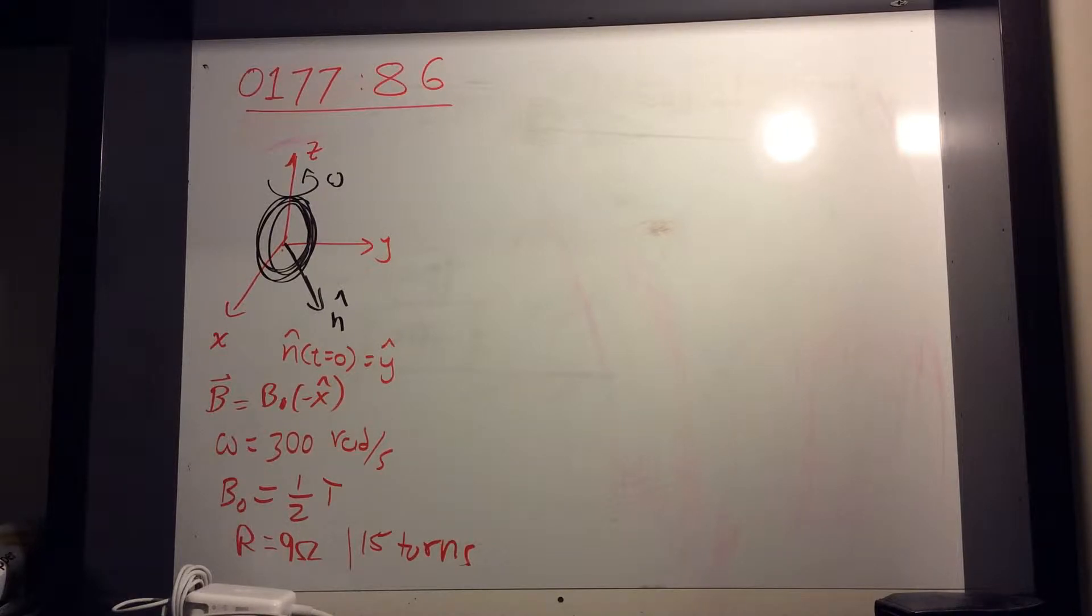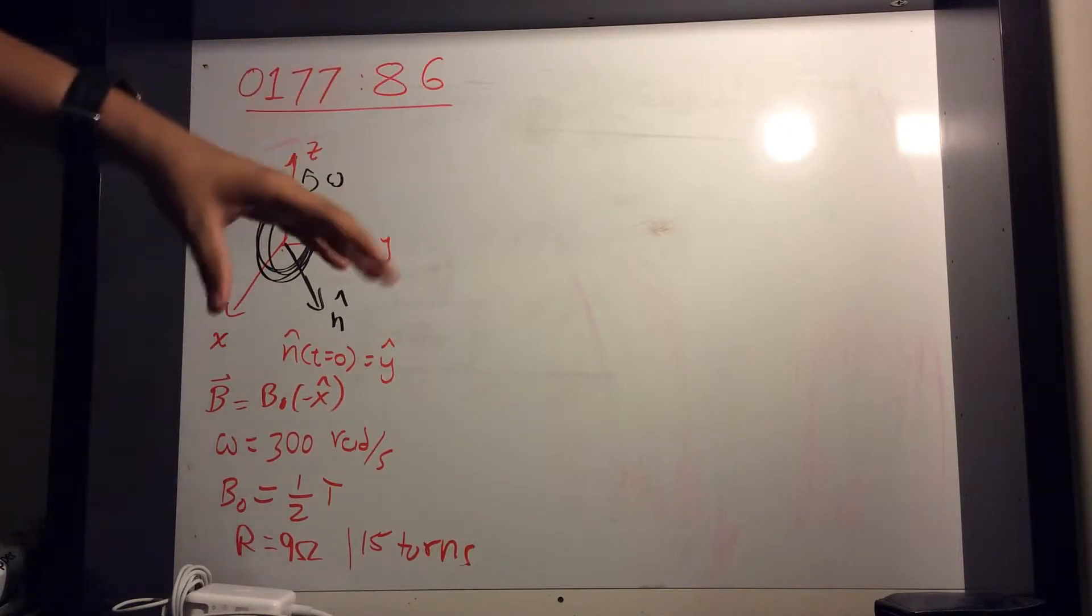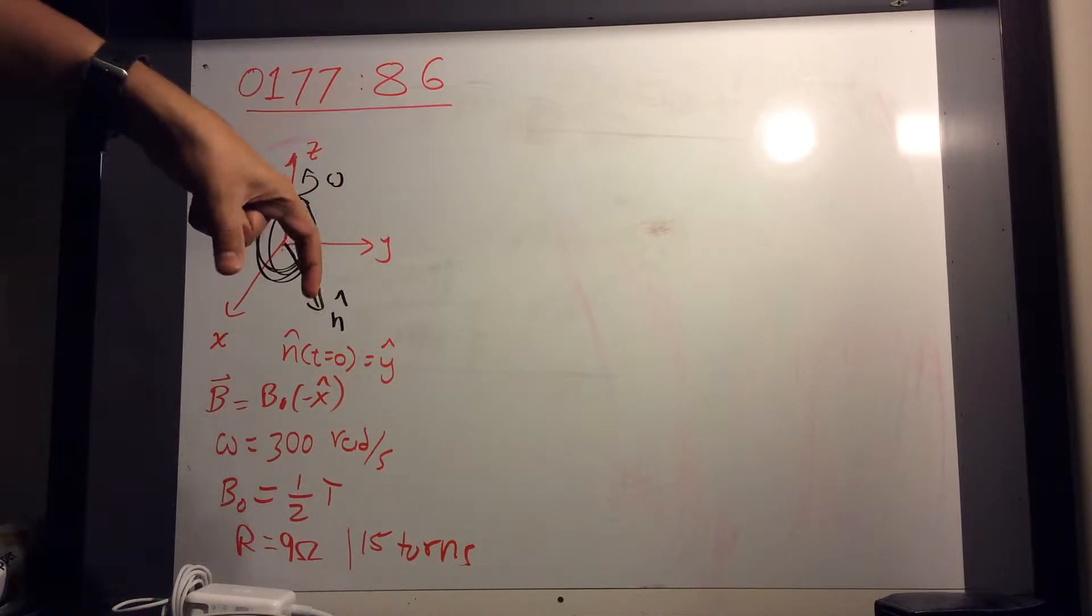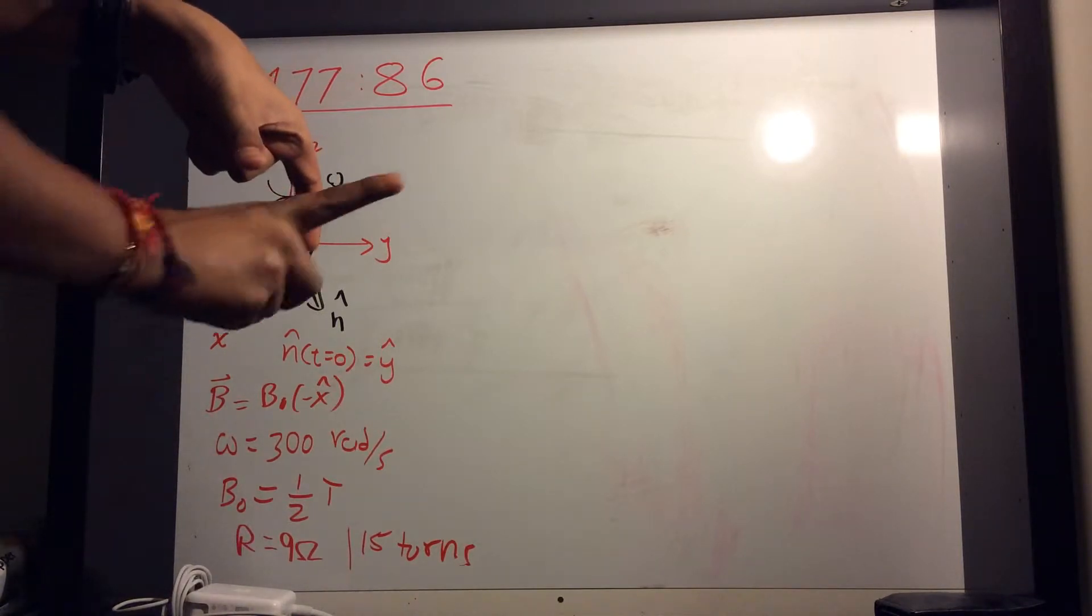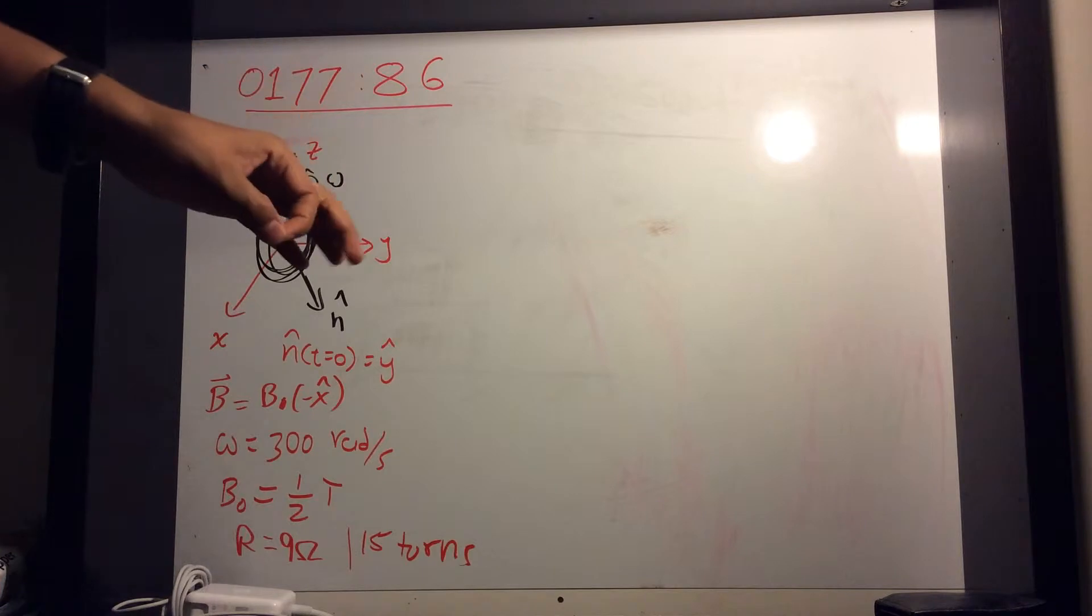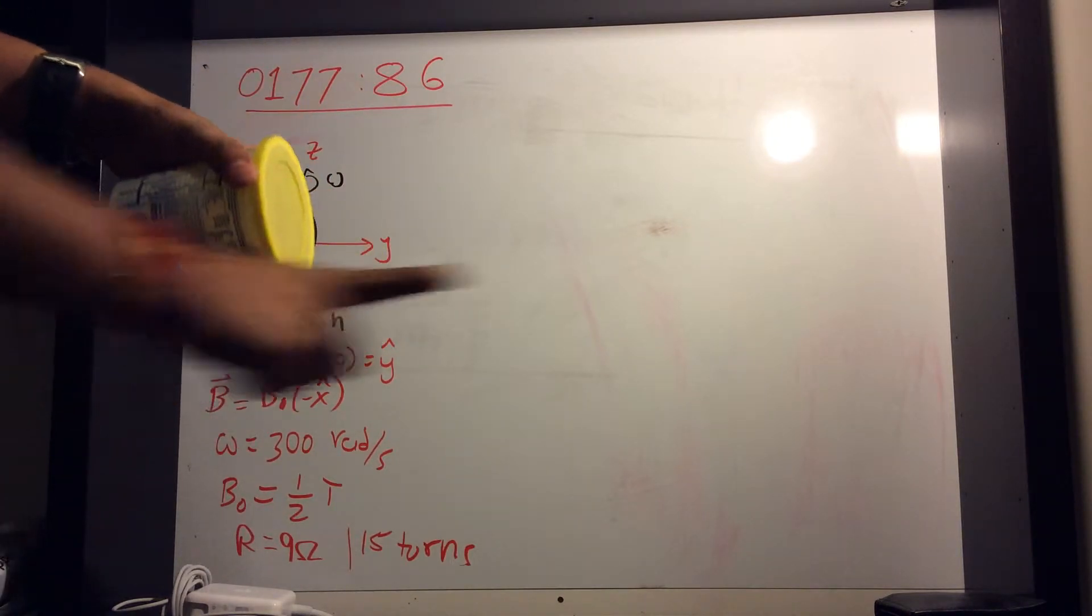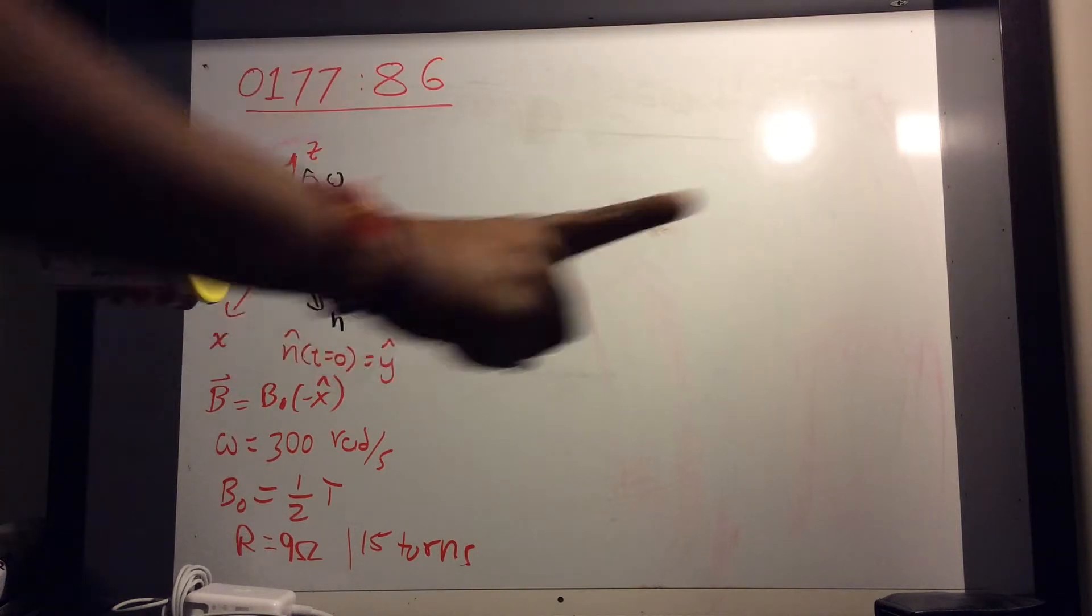So this is what the problem is. You have a coil with 15 turns, which is at first located such that the normal vector of the coil... Now what is normal vector of the coil? Say this was the coil wound like this, normal vector would be pointing perpendicular to the surface.